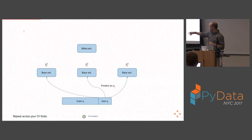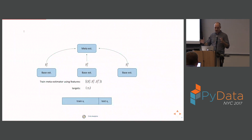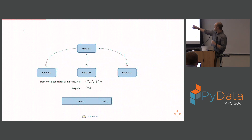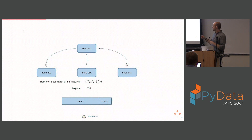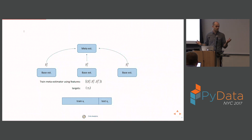For each base estimator, there's a set of y-hats — predictions for the true value y. You repeat this across your CV folds, so at the end you'll have one out-of-sample prediction for every data point. Now here's the actual stacking bit: you take these collected y-hats and squish them together into a set of features. Then you train your meta-estimator using those out-of-sample predictions as your features and the true labels as your targets.